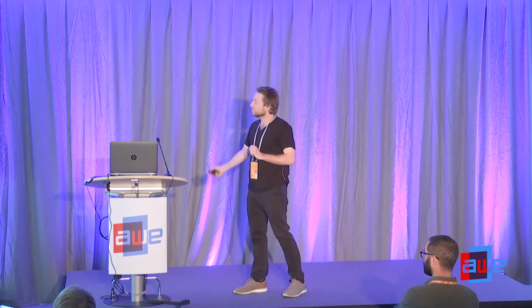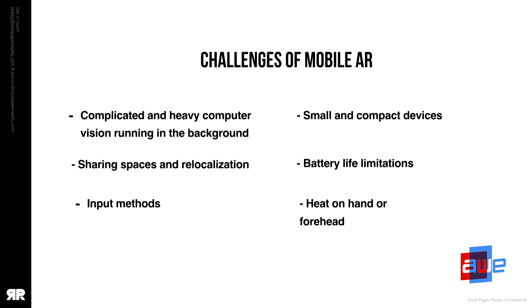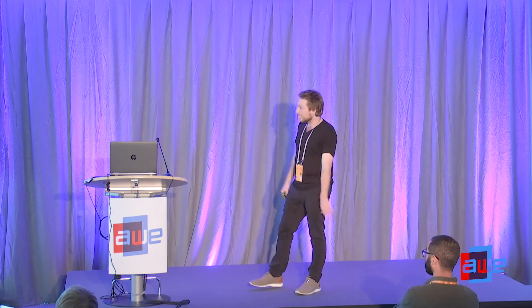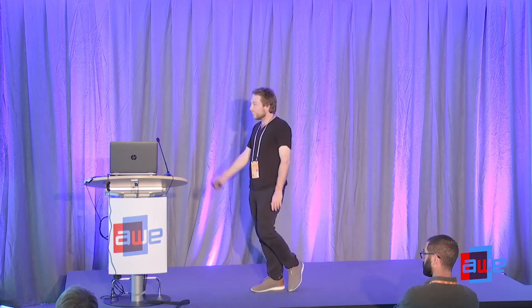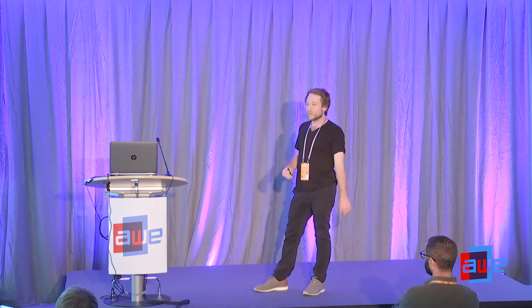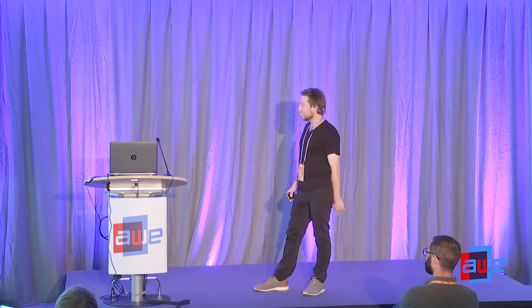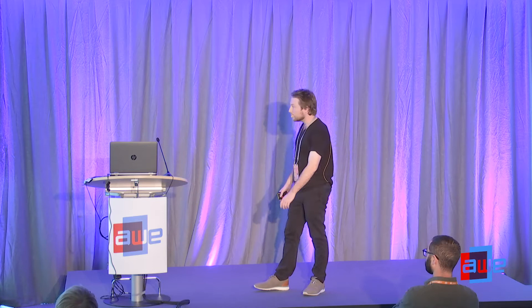The challenges of AR: complicated and heavy computer vision running in the background. On your headset or smartphone you've got cameras running and all that CV to optimize. You're sharing spaces and relocalizing — after doing that CV and understanding your environment, you need to share that information, which requires a lot of processing. Then there are input devices: phones with touch, a Magic Leap headset with a controller, HoloLens with gestures — connecting all that together can be a bit of a mess.